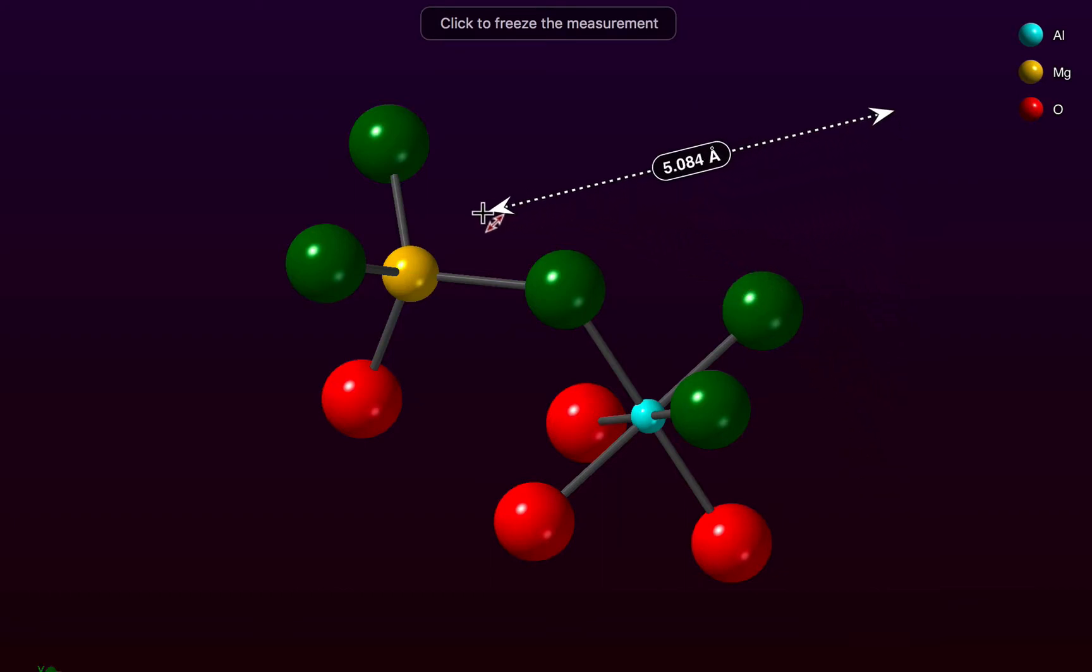To anchor the measurement, just click again, and your measurement is displayed. If you shift-click, you can preserve an existing measurement.